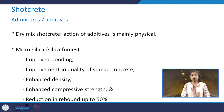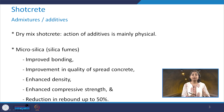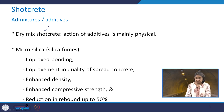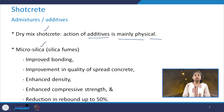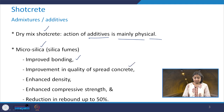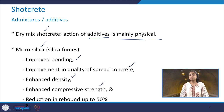Coming to the admixtures or additives, let us learn these in detail — whether they are helpful, and whether any particular type of admixture has advantages or disadvantages. As far as dry mix shotcrete is concerned, the action of additives is mainly physical. In the case of micro silica, also called silica fumes, these help in improving the bonding and quality of the sprayed concrete, resulting in enhanced density and compressive strength, and also reducing rebound by as high as up to 50%.